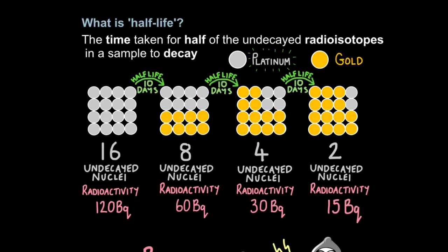If I came back 10 days later, I see another half has decayed. So we had eight remaining, but now we only have four remaining, because four more have decayed into gold. And 10 days later, a half has decayed again. So before I had four, now I only have two platinum atoms, because another two have decayed into gold. So every 10 days, this sample is basically losing half of its radioactivity. In other words, every 10 days, half of the undecayed radioisotopes decay. So the half-life of this radioisotope, this platinum, would be 10 days.